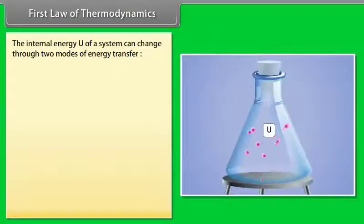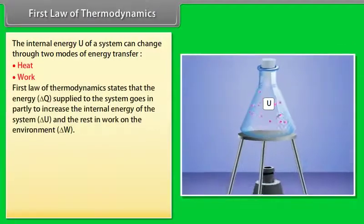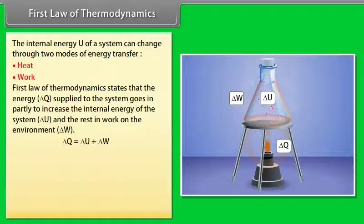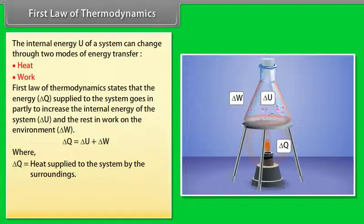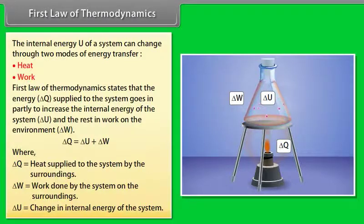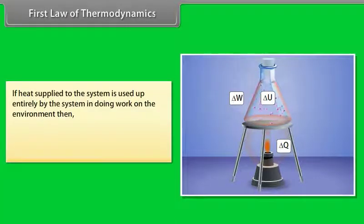First law of thermodynamics. The internal energy U of a system can change through two modes of energy transfer: heat and work. The first law states that the energy ΔQ supplied to the system partially increases the internal energy ΔU and the rest does work on the environment ΔW, so ΔQ = ΔU + ΔW. Here, ΔQ is heat supplied by surroundings, ΔW is work done by the system on surroundings, and ΔU is change in internal energy. If heat is used entirely for work, then ΔU = 0, giving ΔQ = ΔW.